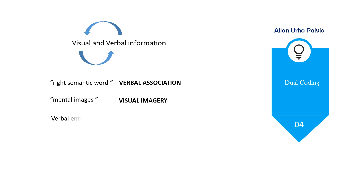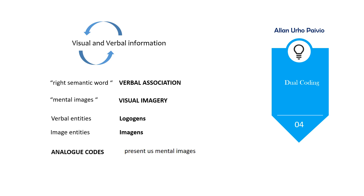Verbal entities refer to logogens, while image entities refer to images. Analog codes are tasked to present us mental images when we perceive an environmental stimulus like the school — once we see it, the mental image that our minds could create is highly similar to what we saw. On the other hand, symbolic codes are used for mental representations such as words and combinations of words.